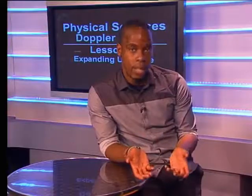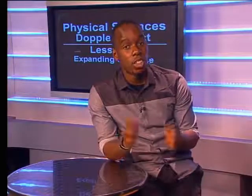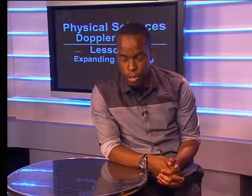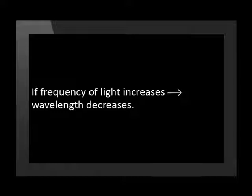From what our astronomers said, a red shift means that stars in our galaxy are moving away from earth and blue shift means that the stars are moving towards earth. Note also that if frequency of light increases, the wavelength decreases, so we could also explain the shift in terms of the wavelength of light.